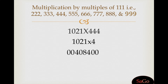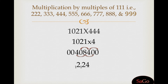0, 0, and 4 makes 4, write 4. 0, 4, and 8 makes 12, write 2 and give 1 for the carry. 4, 8, and 0 again gives 12, write 2 and give 1 for the carry. 8, 0, and 4 also gives 12, write 2 and give 1 for the carry.